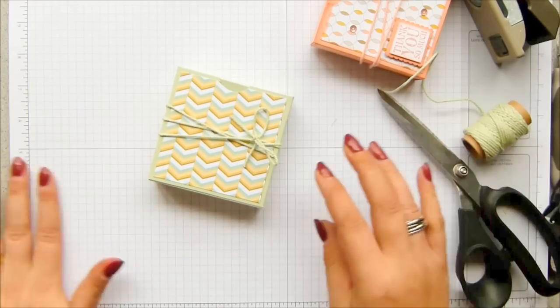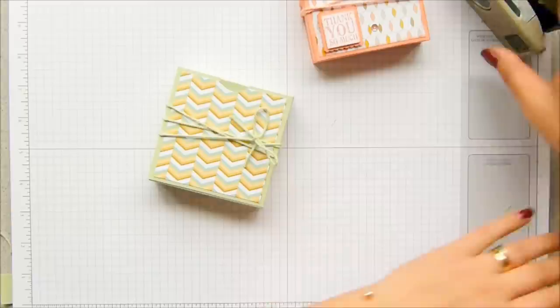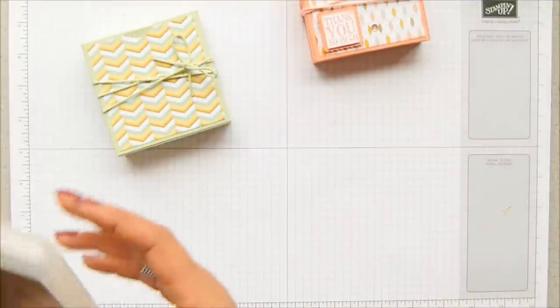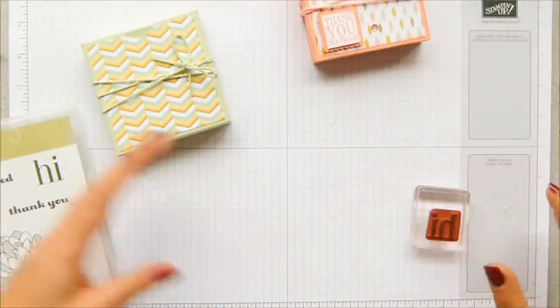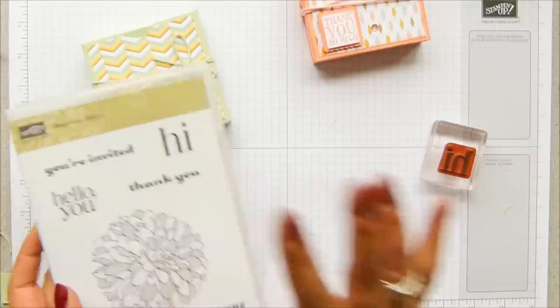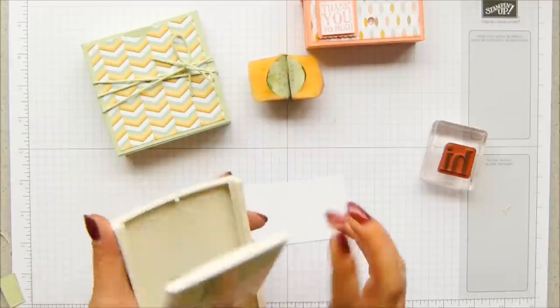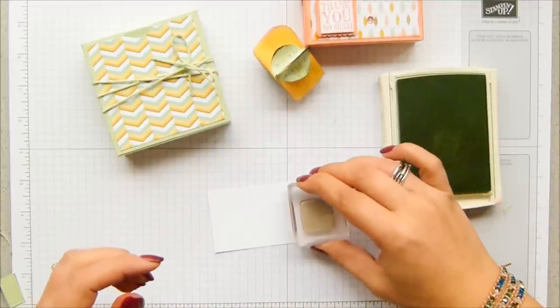Okay, and then final little bit of stamping. This was the thank you so much that I took from my very favorite Lots of Thanks set. But it might not be a set of thank you cards, it might just be a set of thinking of you cards or something like that. So I've got Hi from Regarding Dahlias, or Regarding Dahlias, however you pronounce it, and my Pistachio Pudding ink. I'm going to put it onto a piece of Whisper White.